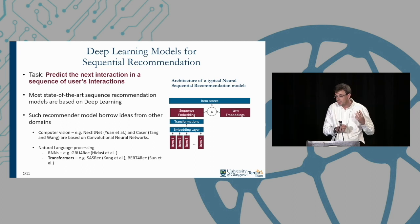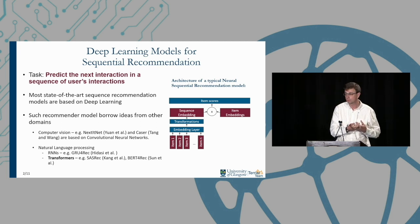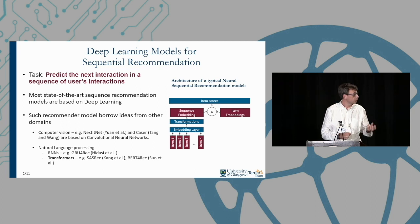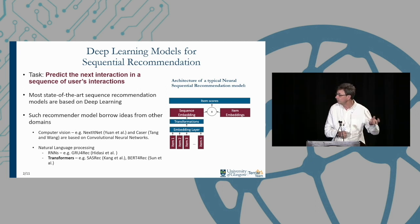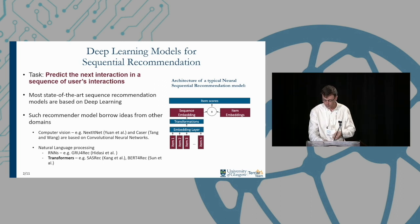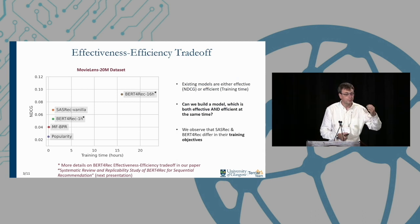These models tend to borrow ideas from other domains. From computer vision we've received convolutional neural networks, used in models such as NextItNet and Caser. From natural language processing we've had RNNs, used in GRU4Rec, and more recently transformers — also from NLP — giving us models like SASRec and BERT4Rec, which are arguably state-of-the-art.